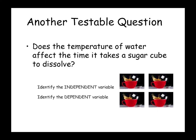Does the temperature of water affect the time it takes a sugar cube to dissolve? Identify the independent variable and the dependent variable. In this experiment, you are changing the temperature of the water — you may use hot water, cold water, or warm water. What you are measuring is the time it takes a sugar cube to dissolve in those different types of water. So the independent variable is the temperature of the water, and the dependent variable is how long it takes a sugar cube to dissolve.